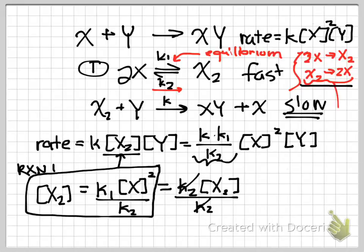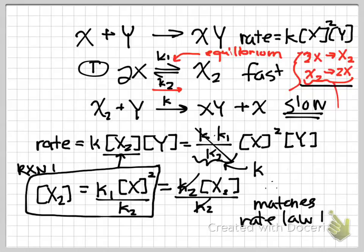And I can lump this all into one K, because these are all just constants, so all that just goes away and becomes K, and therefore that matches the rate law that we found experimentally.